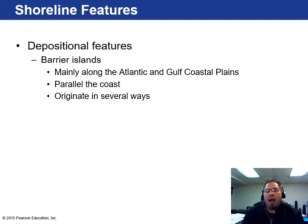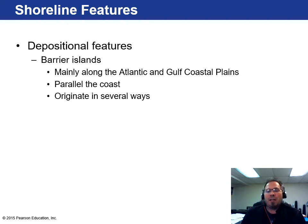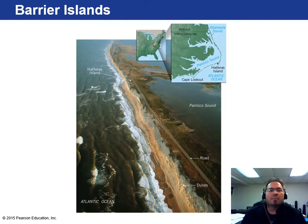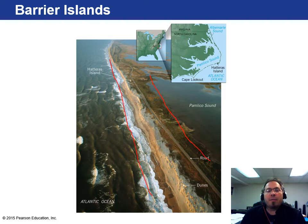Barrier islands, like the Outer Banks of North Carolina, form mainly along Atlantic and Gulf coastal plains, parallel to the coast. They're thin strips of sand separating the open ocean from a tidal lagoon or tidal pool on the inside. They can be very thin in some spots and thicker in others — it's a beautiful place to visit if you ever get the chance.